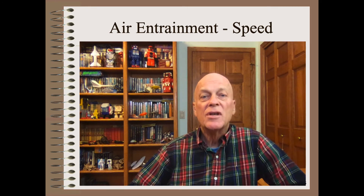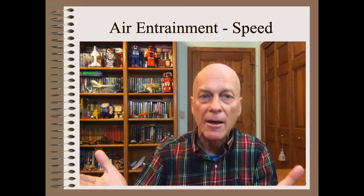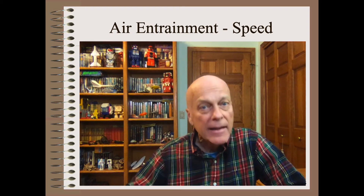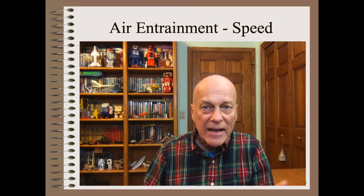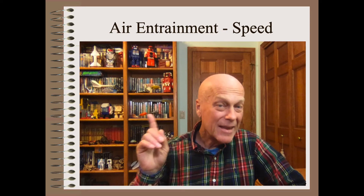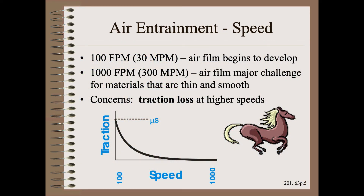For certain applications, air entrainment becomes a very important consideration. These applications are when the case is simultaneously not slow, not narrow, and when the web is not porous and not rough. For that combination of situations, air entrainment means an increasing loss of web-to-roller traction as speed is increased. The range of concern begins at around 100 feet per minute or 30 meters per minute. However, by the time you reach 10 times those speeds, traction is negligible for cases when the web is not narrow and not rough.